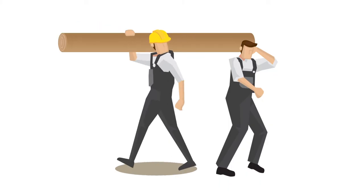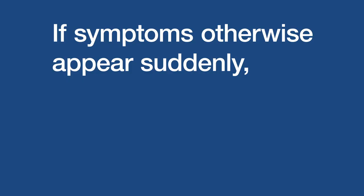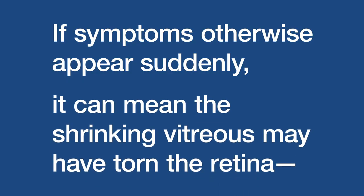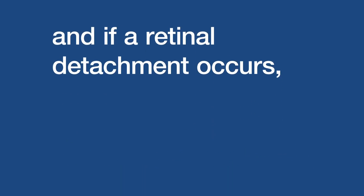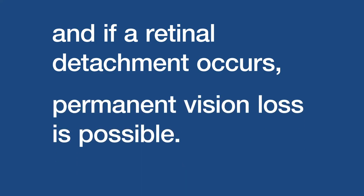The same phenomenon, known as photopsia, can happen when a person's head is hit quite hard, which shakes the vitreous gel. If symptoms otherwise appear suddenly, it can mean the shrinking vitreous may have torn the retina. And if a retinal detachment occurs, permanent vision loss is possible.